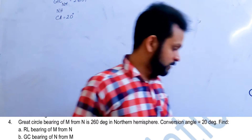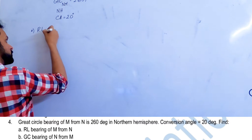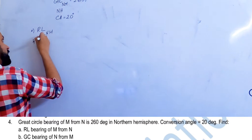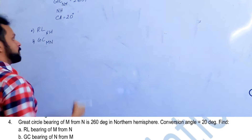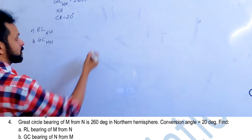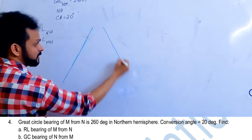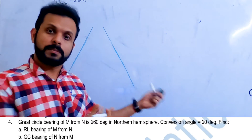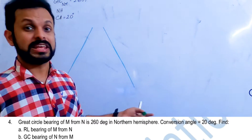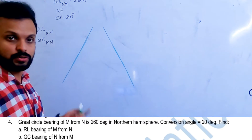We are asked to find the rhumb line bearing of M from N. It is the northern hemisphere, so we draw the meridians accordingly. As discussed in the previous class, we are following Lambert's projection here. You can also do the same question using Mercator — some people find Mercator easier — but Lambert's is more in line with the actual earth.